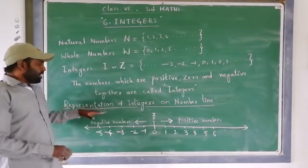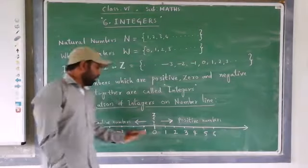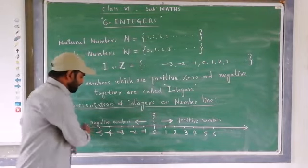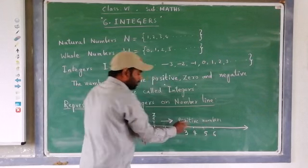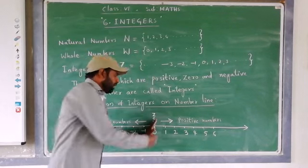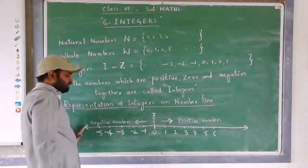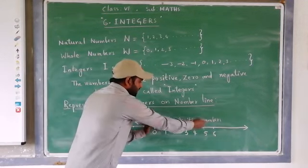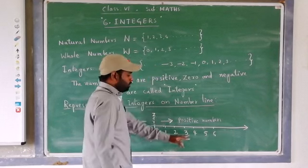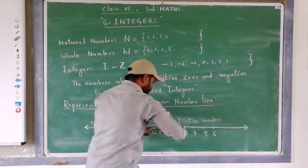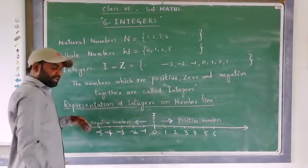Now, let us look at the representation of integers on the number line. On the number line, 0 is in the middle. The left-hand side contains all negatives, and the right-hand side contains all positive numbers. From 0, if you move to the right-hand side, the value of the numbers will increase: 1, 2, 3, 4, 5, 6, 7, and so on. But when you move to the left-hand side, the value of the number will decrease.